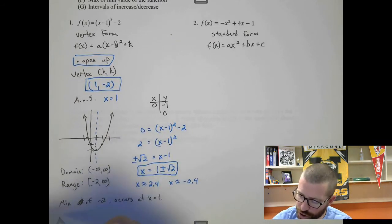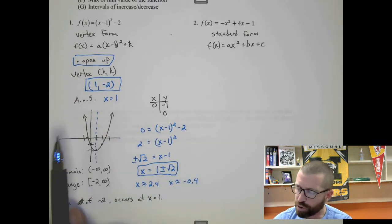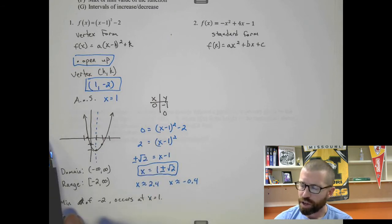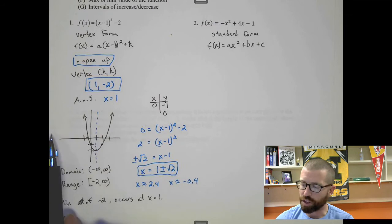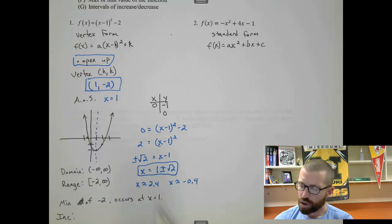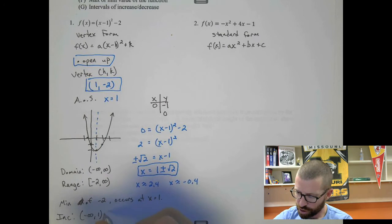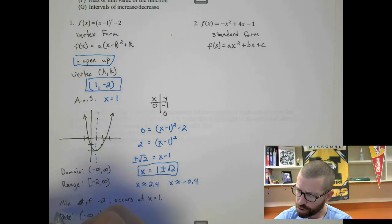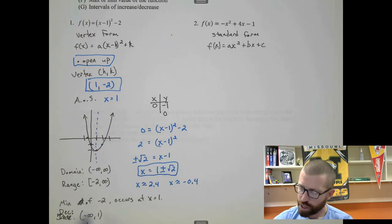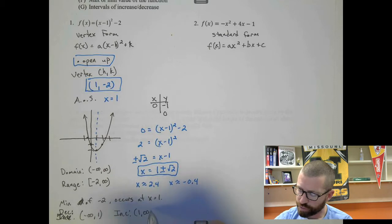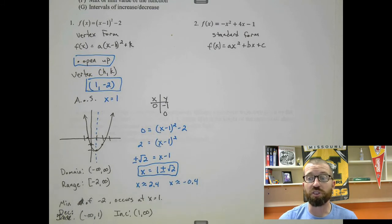And then the increasing, decreasing, it's going to go left to right. So go all the way left. And if I'm thinking about riding on the curve, it's going down until x is 1. So from negative infinity to 1, we're decreasing. I'm making a mess here. I apologize. So I'm decreasing from negative infinity to 1, and then we're increasing from 1 to infinity. So remember, increasing and decreasing always uses x values.